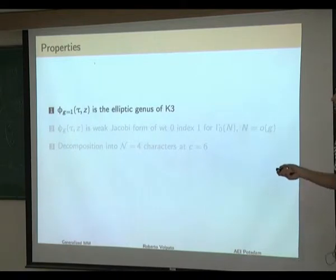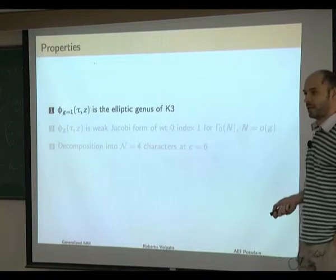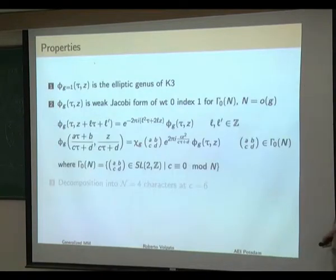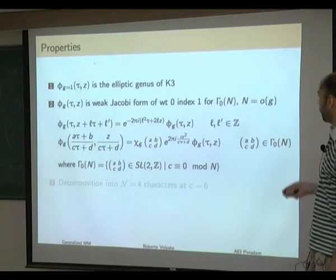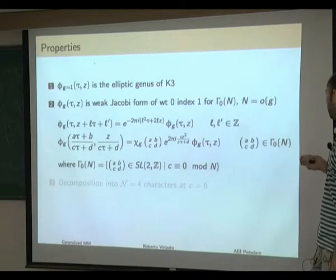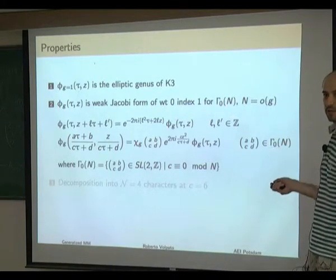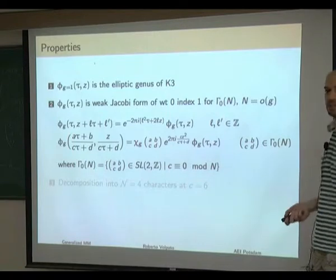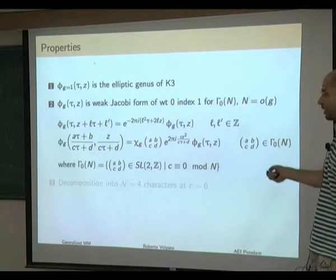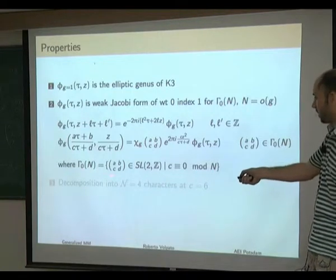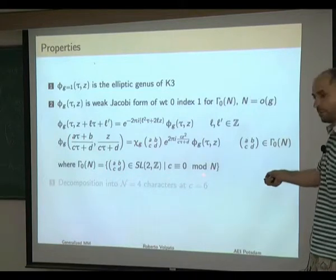Property zero is that for G equal to the identity, this is simply the elliptic genus of K3. All these functions are weak Jacobi forms of weight zero and index one, under some subgroup of SL(2,Z). In particular, if G has order N, then the relevant subgroup is Gamma-zero(N), the subgroup of SL(2,Z) where the entry C is a multiple of N.